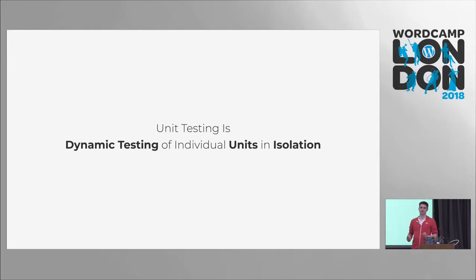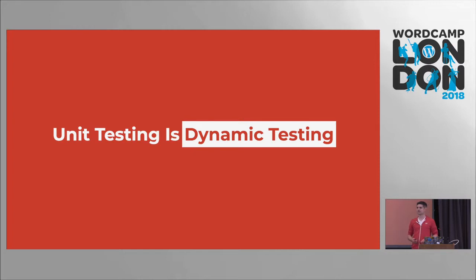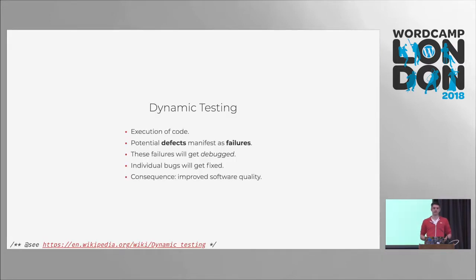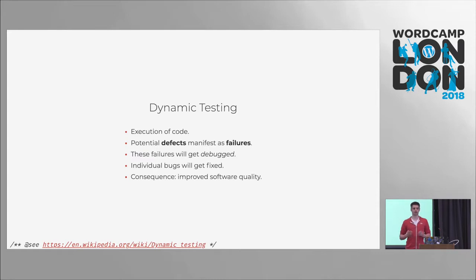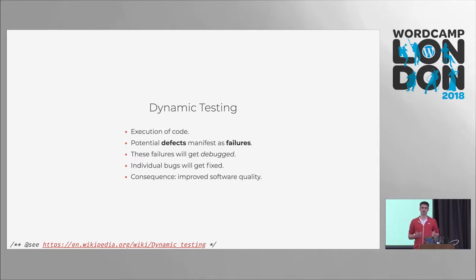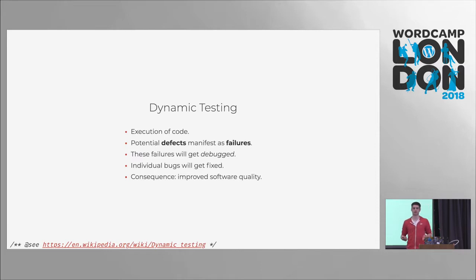Let's go through these three things step by step. Unit testing is dynamic testing — dynamic testing means we execute our code. In contrast to that, we have static testing, which means analyzing or reading the code. Dynamic testing is really about running our software. When there are defects in the software they might result in failures. The failures then have one or more defects as a reason, so we want to debug them, find the bugs, fix these bugs, and then we improved our software quality.